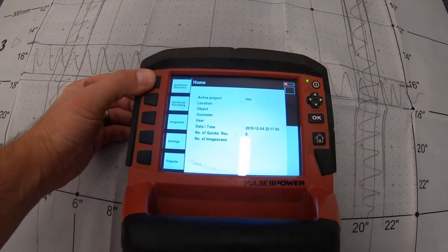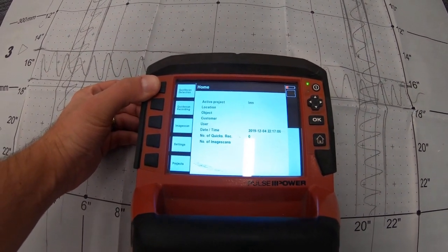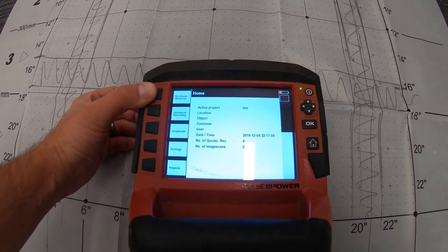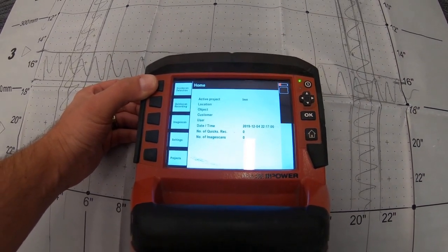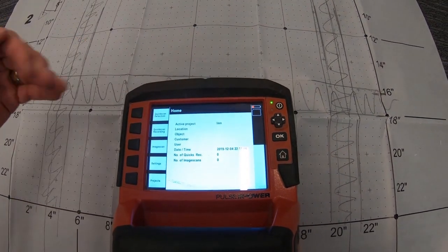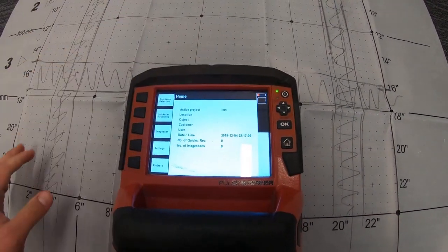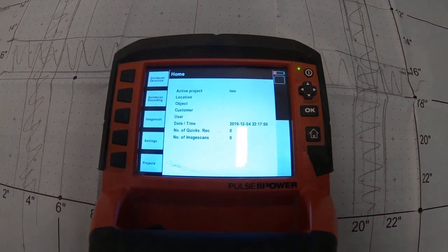If you're going to use quick scan detection, usually it's just because you want to do a quick check, or you know that it's going to be pretty easy for you to find rebar or objects that are going to be exactly perpendicular to the direction of your scan. That's one of the reasons you want to use quick scan.